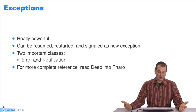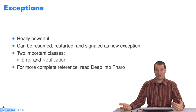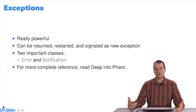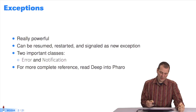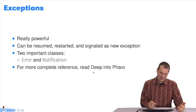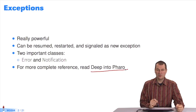There are two kinds of exceptions: errors, which are often fatal, and notifications, which we can say we don't need — they're just for reference. If you're interested in reading a complete reference on exceptions, there's a whole chapter in the book 'Deep into Pharo', which is on the MOOC website and available free online.